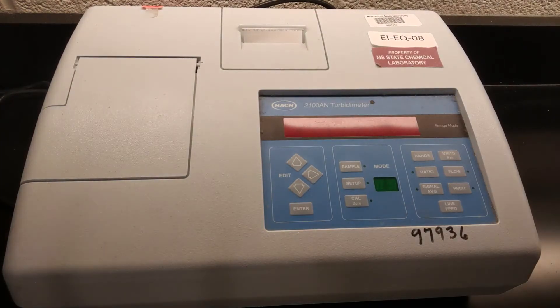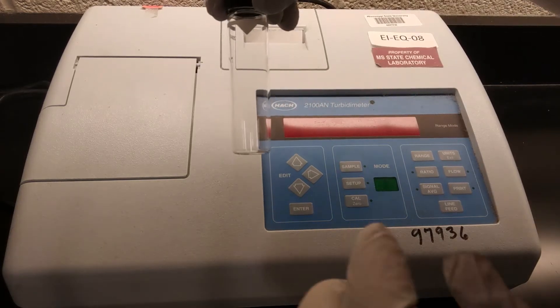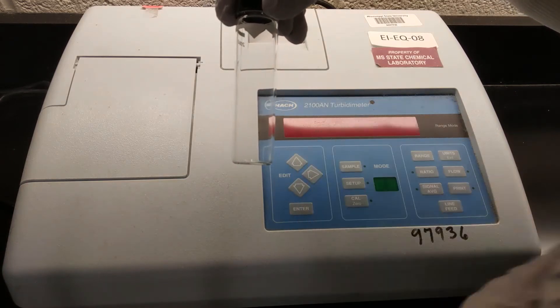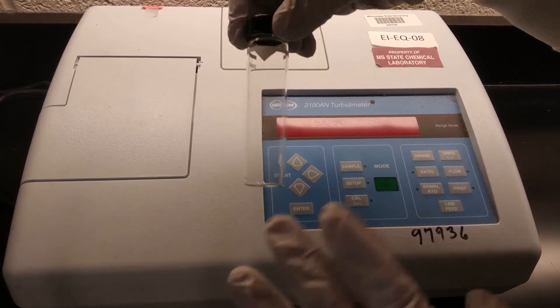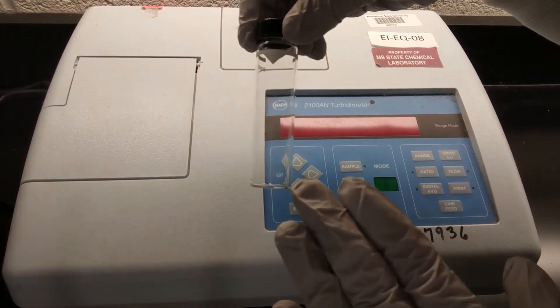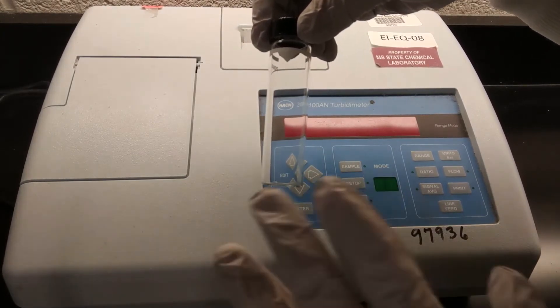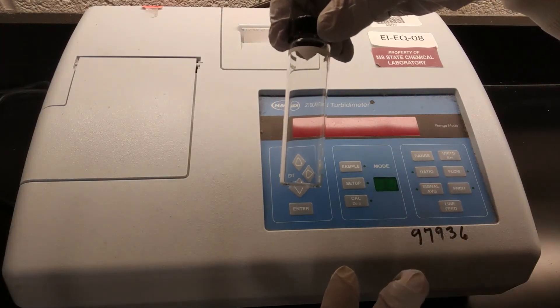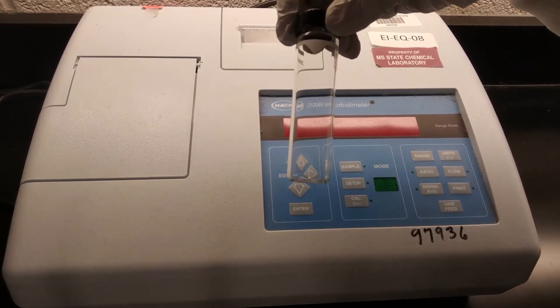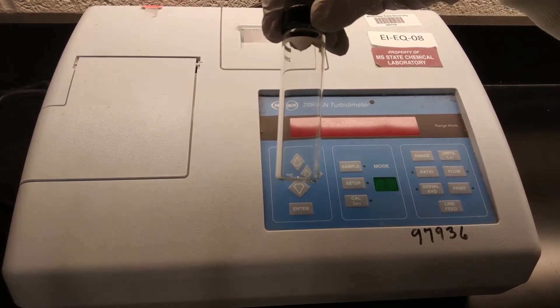One thing to really keep in mind before you start doing this analysis is that this is an optical analysis. And so what that means is we're going to be shining light into and through our samples and measuring the amount of light coming out of the cells. What that means in practical terms is that you want to avoid touching the sides of this cell as much as possible, and especially you don't want to be touching it with ungloved hands because the oils in your hands will get on the sides of the glass and then that will interfere with the optical measurement.